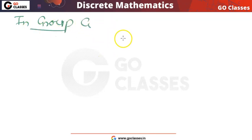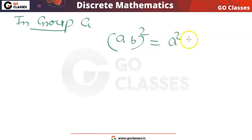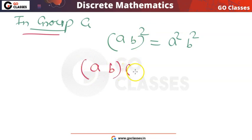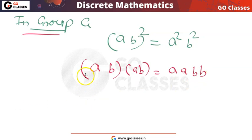A group G is given to us in which the property (ab)² = a²b² is satisfied. Writing it out: ab·ab = a·a·b·b. We can apply the associative property to rearrange the groupings. Since every element in a group has an inverse, we can multiply both sides by a⁻¹.